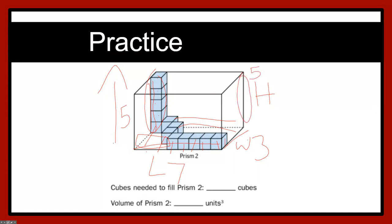So seven times five equals 35, times three equals 105, or 105 units cubed, or cubic units.